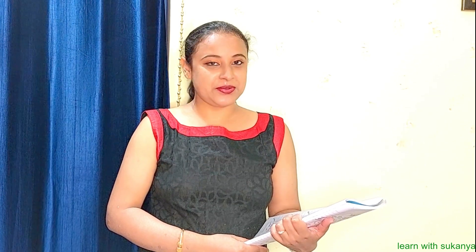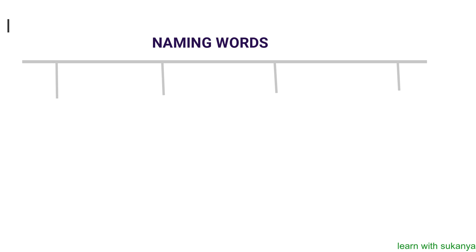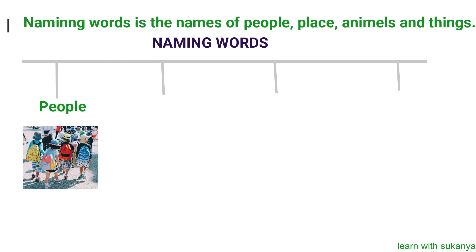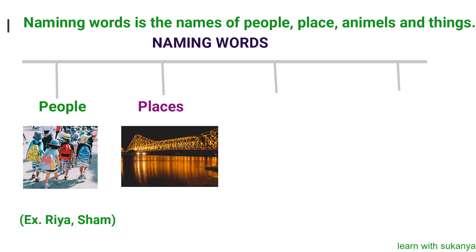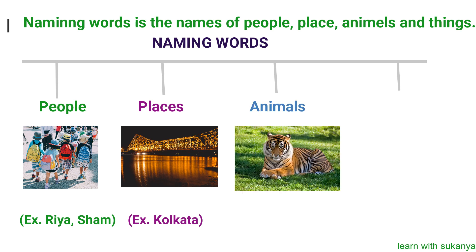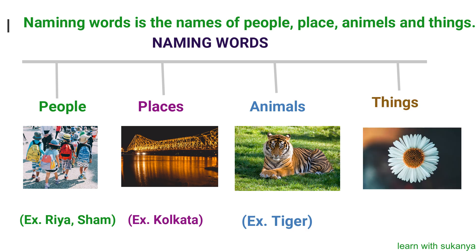Children, do you remember what naming words are? Naming words are the names of people like Rhea, Sam. Places like Kolkata, Mumbai. Animals like Tiger, Giraffe. And things like Flower, Balloon, etc.